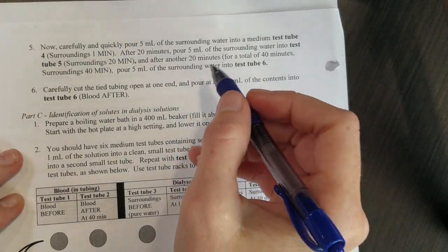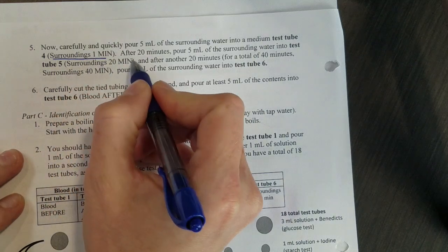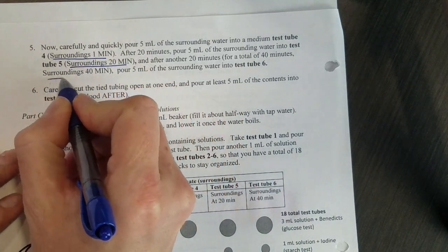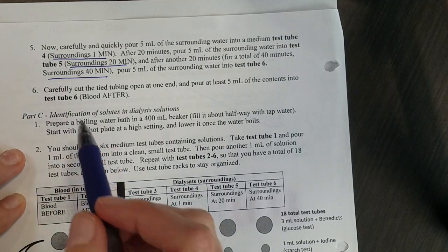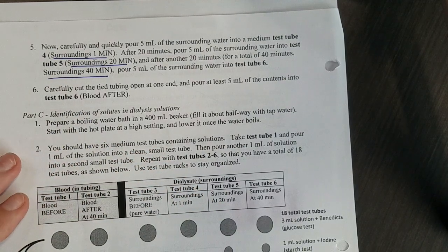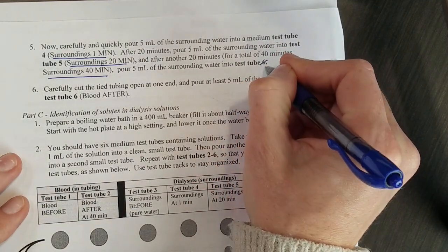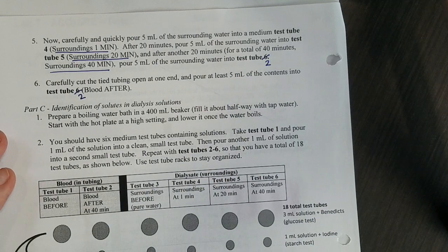After you've done that you're going to collect some of those surroundings at one minute, 20 minutes, and 40 minutes. Then at the end you'll take that tube of blood and dump it into a test tube. This says test tube six but it should be test tube two.